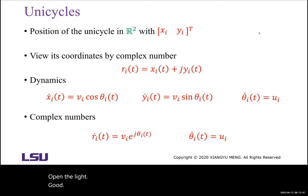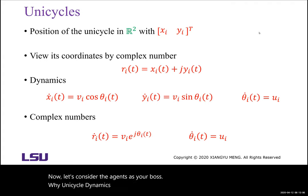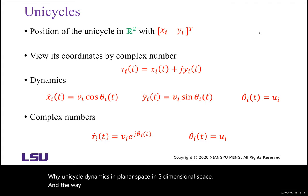In this lecture, we will extend the idea of formation control from the position to the angles, to the heading of each agent. Now let's consider the agents as robots. They are modeled by unicycle dynamics in planar two-dimensional space, and we denote the position of each robot as xi and yi.